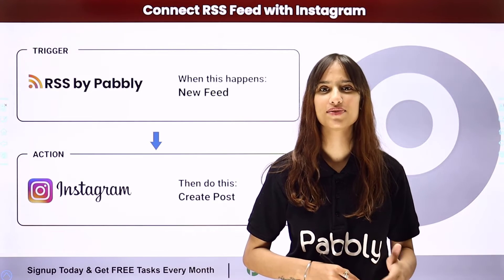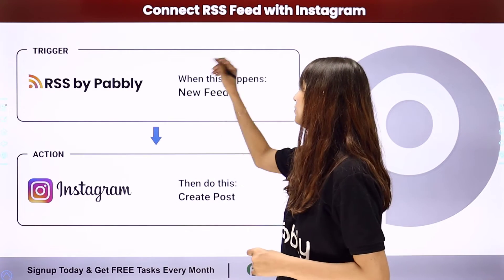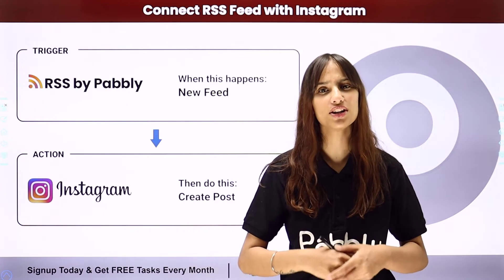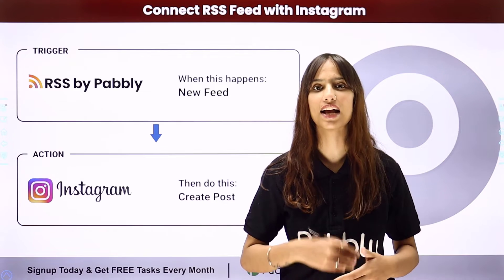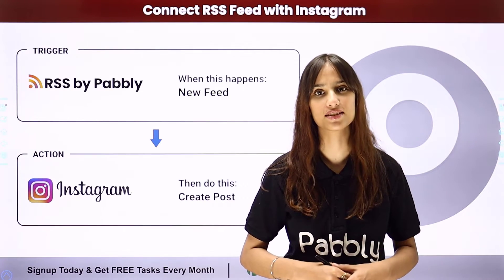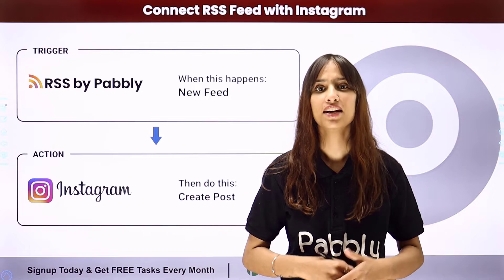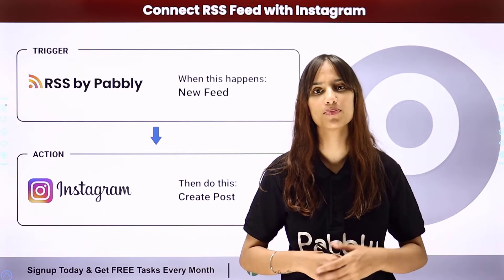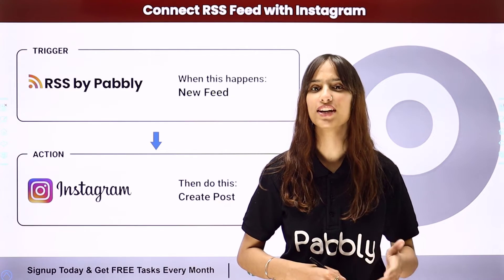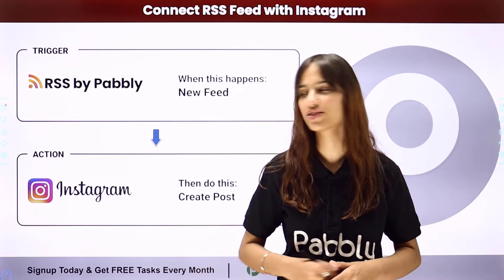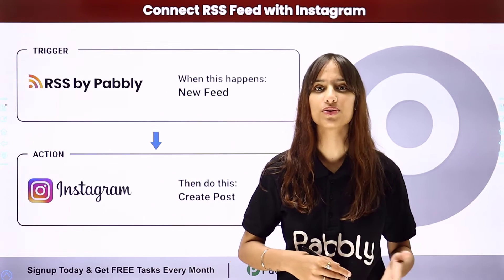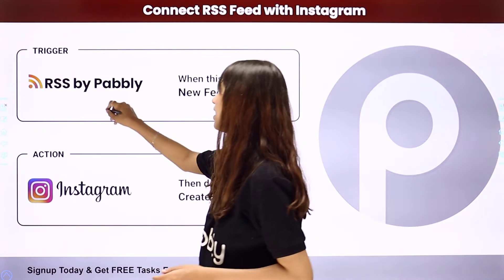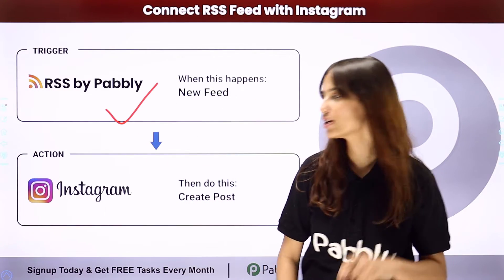Hello everyone, welcome back to Pabbly. In today's video we are going to understand how to connect RSS feed with Instagram. Let's suppose that you have a website, a news channel, or an e-magazine and you are updating your RSS feeds on a regular basis. Whenever there is a new update in your RSS feed, you want to create a post on Instagram using the same details. To do this, you need to build an integration using Pabbly Connect. My trigger application will be RSS by Pabbly and my action application will be Instagram.